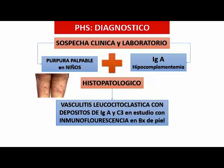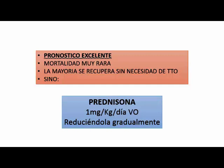El pronóstico es muy bueno, la mortalidad es muy rara. Estos pacientes generalmente se recuperan sin necesidad de tratamiento. Generalmente la complicación mayor es cuando tienen compromiso renal. La complicación más seria de una púrpura palpable en niños es la glomerulonefritis. El tratamiento generalmente es solamente corticoterapia: prednisona de un miligramo kilo día, con reducción gradual.